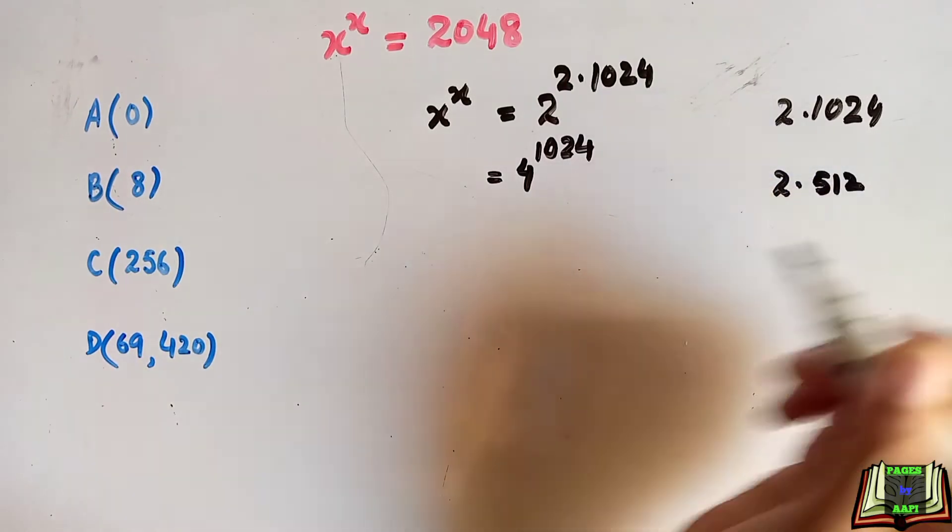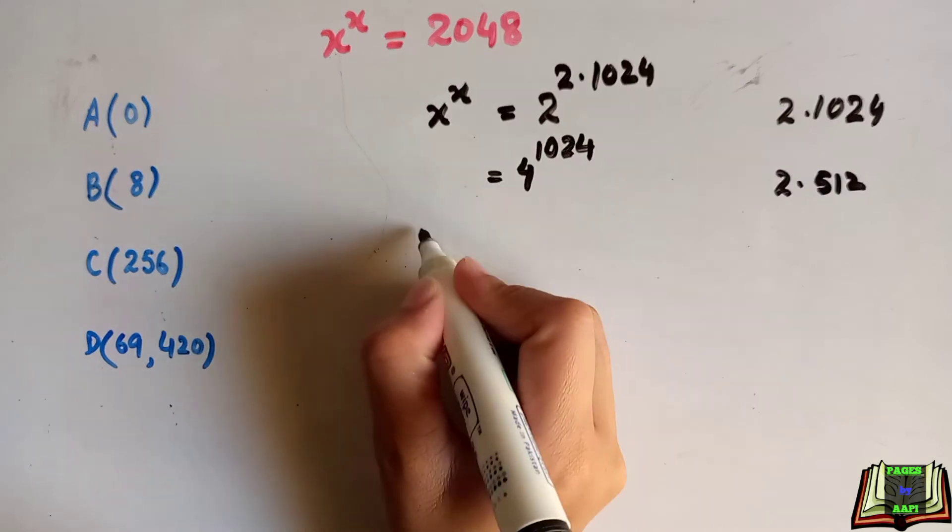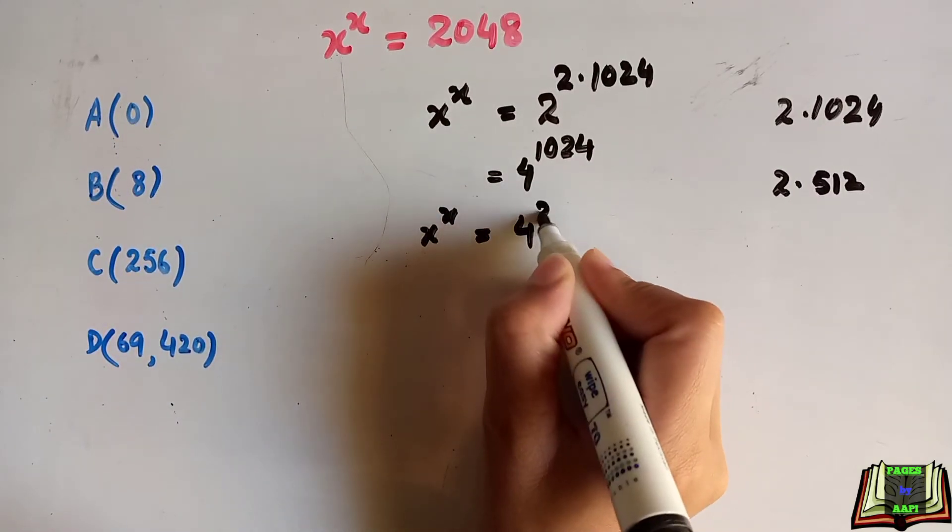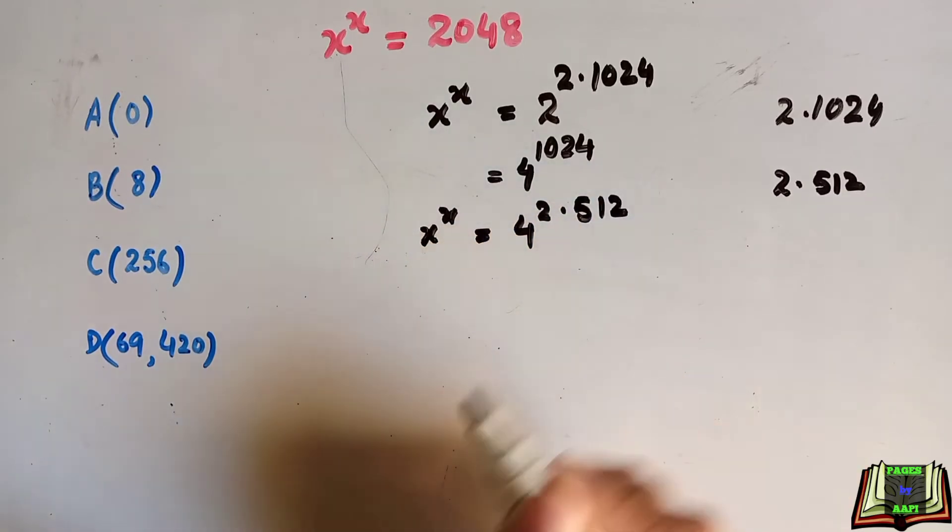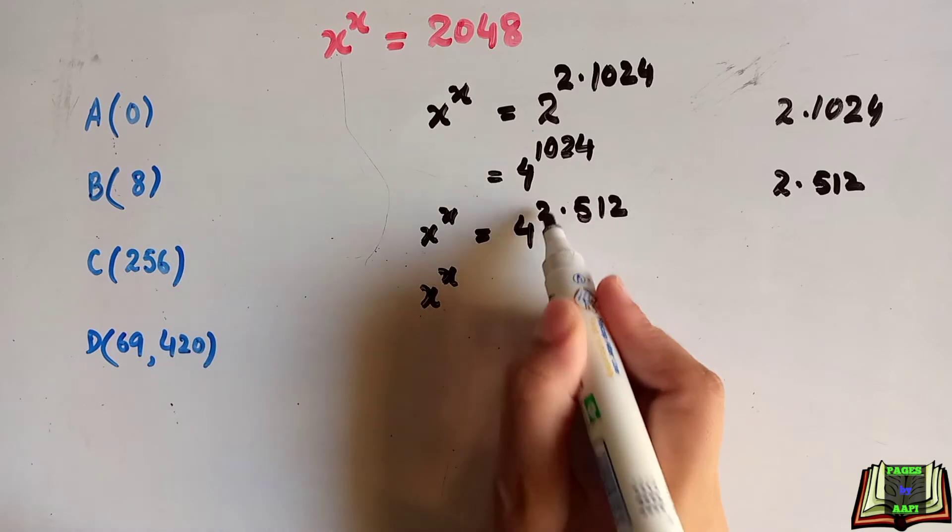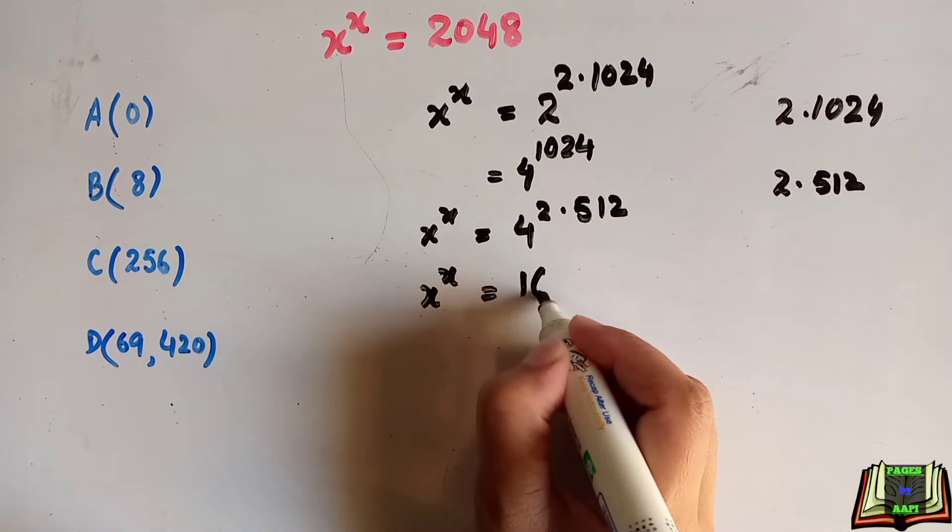2 into 512. And now we are going to repeat the process: x to the power x equals 4 to the power 2 into 512. Now 4 to the power 2 can be written as 16 (4 times 4 are 16), 16 to